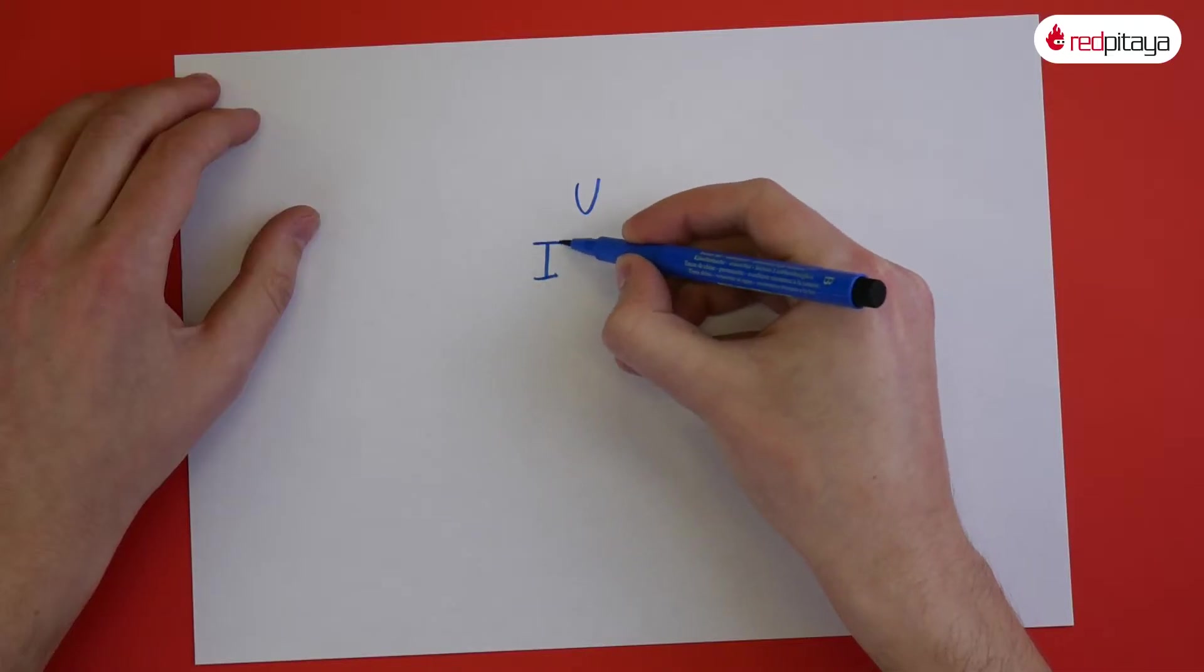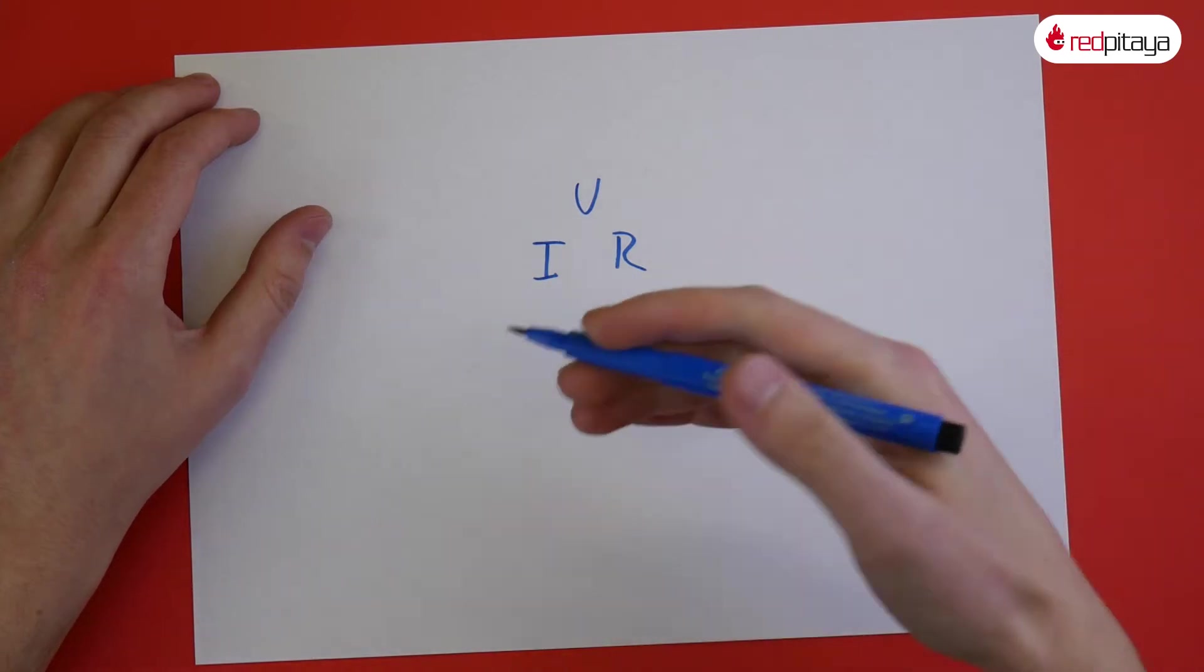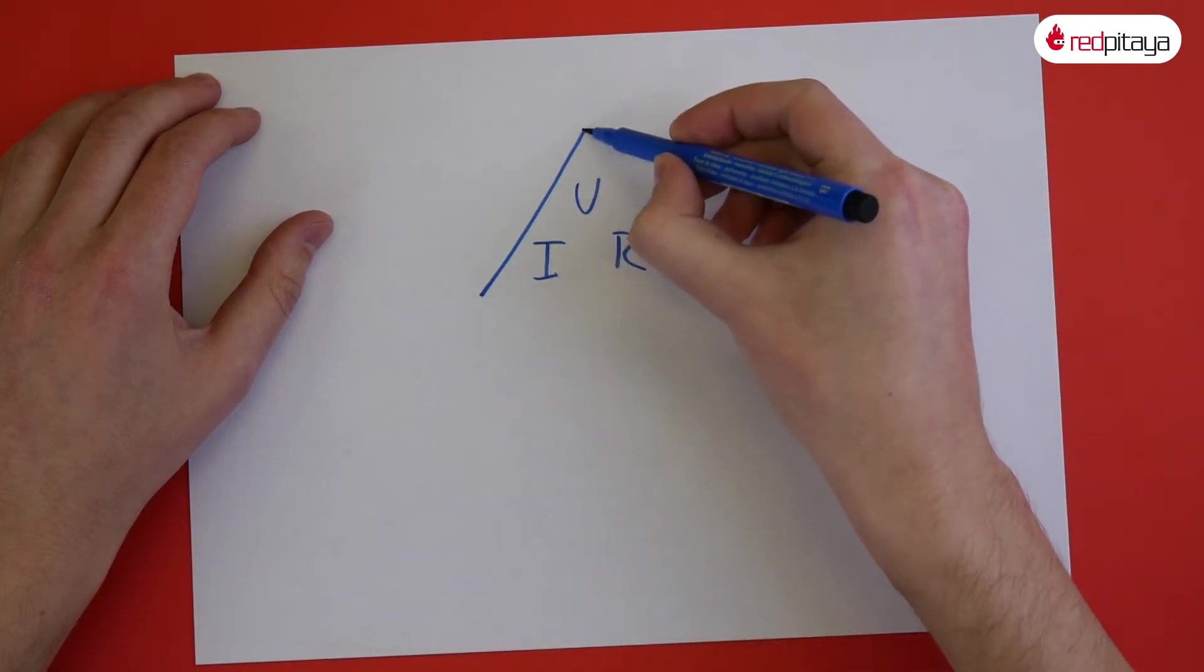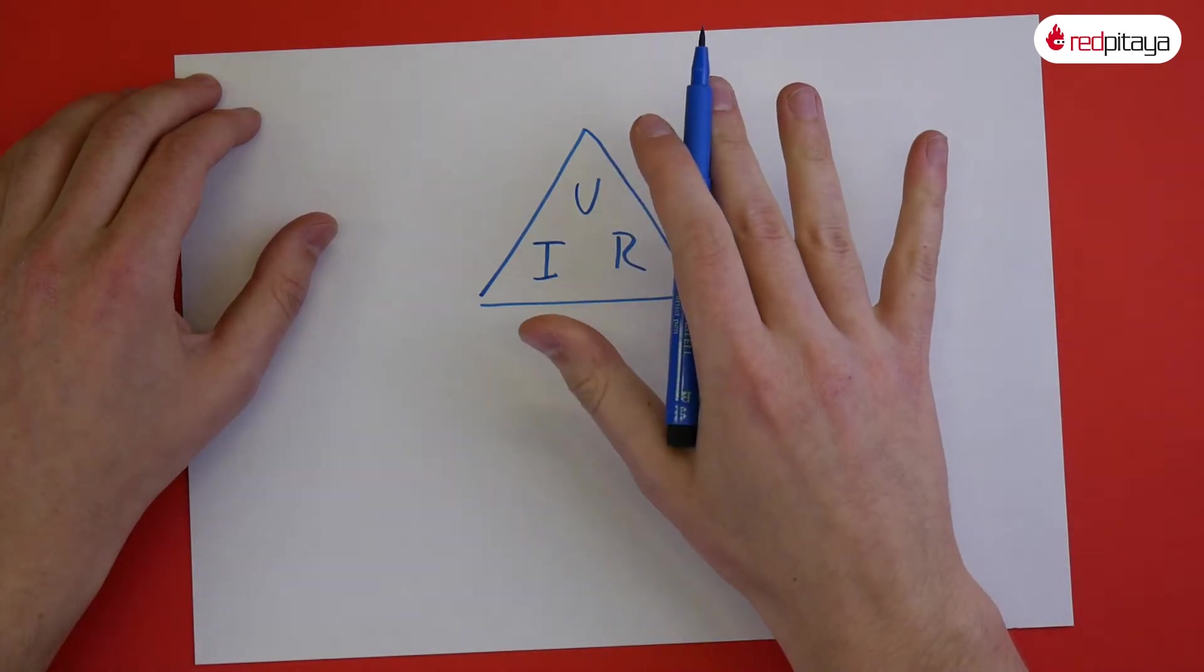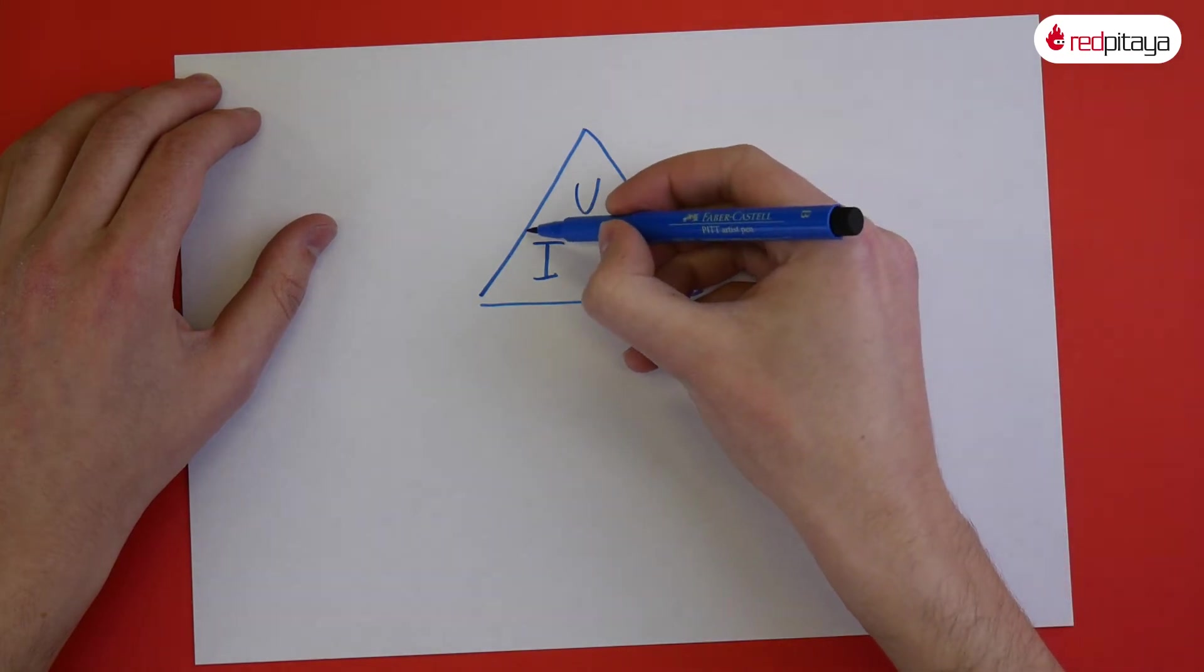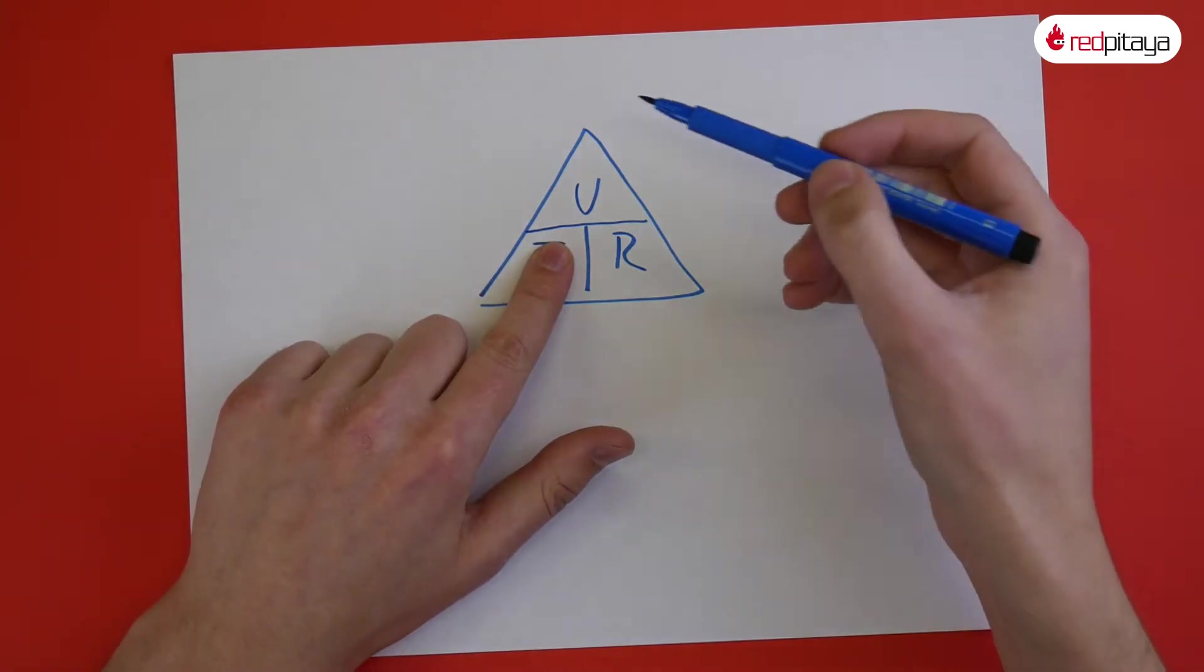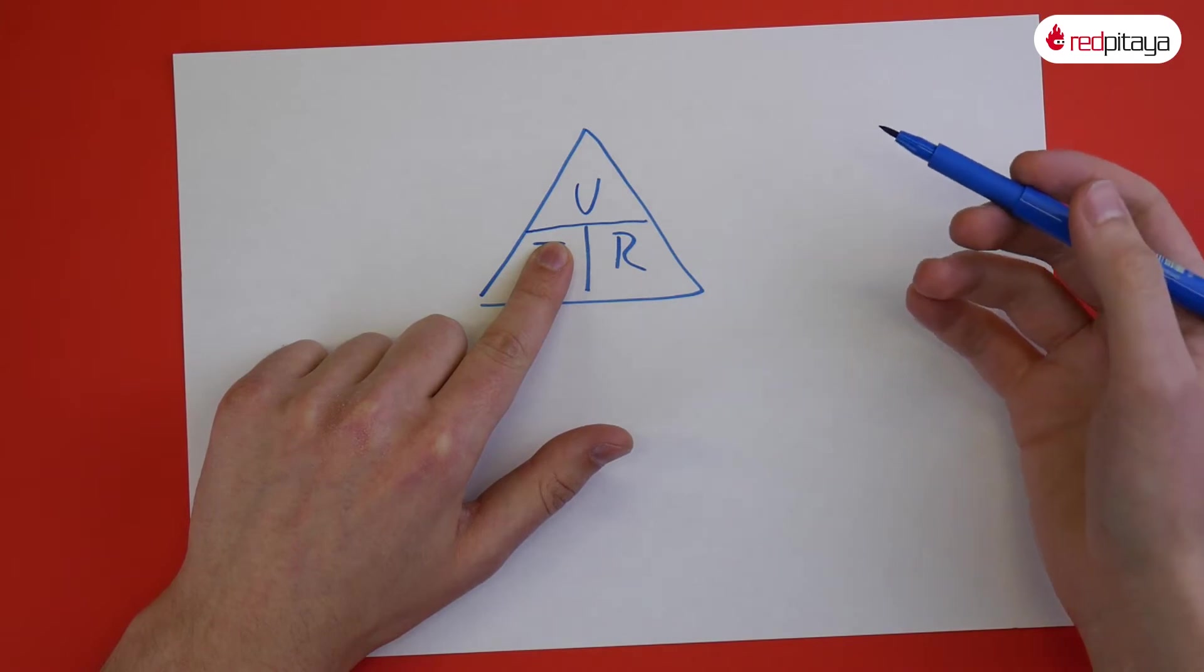Voltage, current and resistance. I could write down the formulas that describe their relations, or enclose them in a triangle. This triangle is a tool for correct equations, which students seem to like quite a lot. To calculate a quantity, cover it and the remaining two quantities take a position of appropriate mathematical operation.